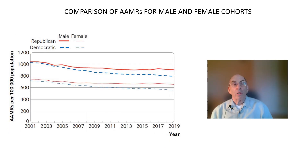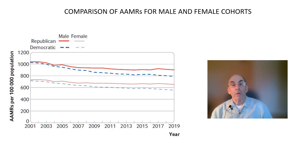The study also looked at subgroups of the population. In this figure, age-adjusted mortality rates for men and women are compared. As expected, mortality rates were found to be lower for women than for men in both red and blue counties. For both men and women, overall mortality rates decreased with time, but the decreases were larger in blue counties compared to red counties.